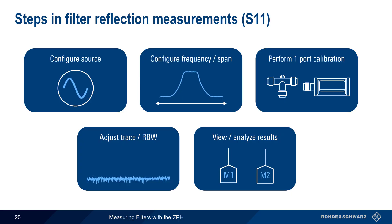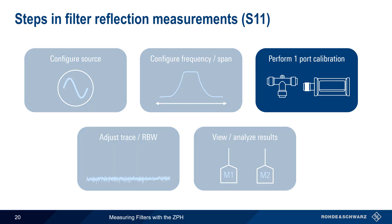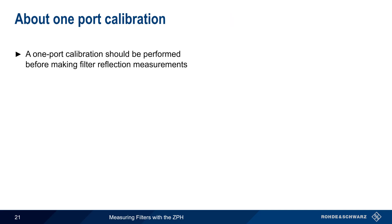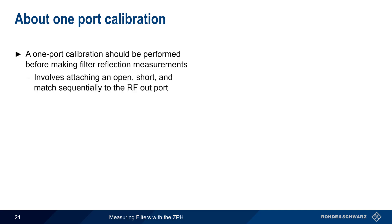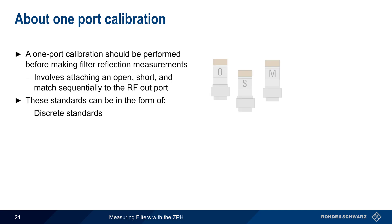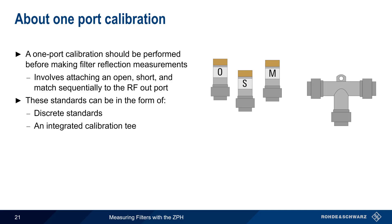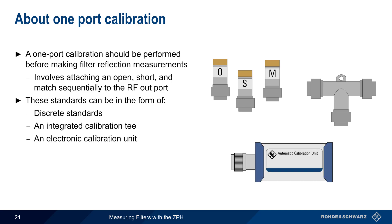The steps in making a reflection measurement are essentially the same as for transmission measurements with one exception. Instead of performing a normalization using a through, in reflection measurements we need to perform a one-port calibration using a set of calibration standards. A one-port calibration should be performed before any reflection measurement, and this process involves sequentially attaching an open, a short, and a match to the tracking generator, or RF output port. These standards can be in the form of discrete standards, or may be combined into a calibration T. In addition to these manually attached standards, electronic calibration units can also be used — these switch the standards in and out automatically and are controlled by the ZPH.